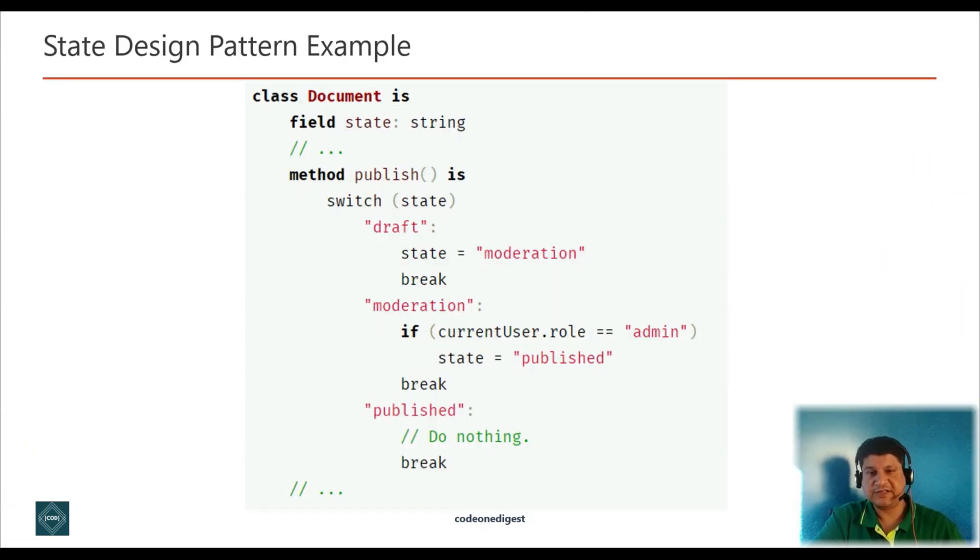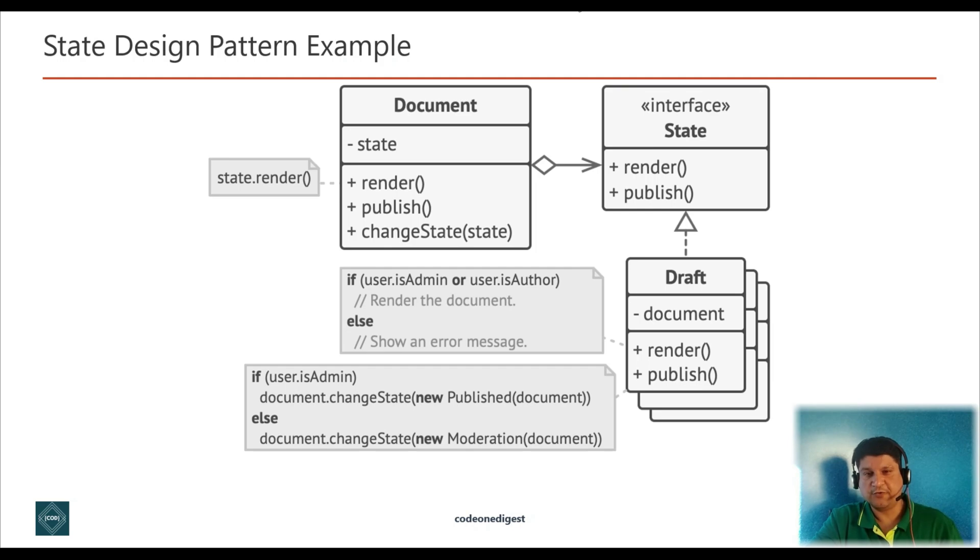But if you see the implementation here, the implementation here is with lots of conditional statements like if else or switch case that selects the appropriate behavior depending on the current state of the object. Seeing this code structure raises an alarm. The biggest weakness here is once we start adding more and more state to a document, then the code gets uglier. The code like this is very difficult to maintain. The problem tends to get bigger as the project evolves. It's quite difficult to predict all the possible states and transition at the design stage. So, how to solve this problem?